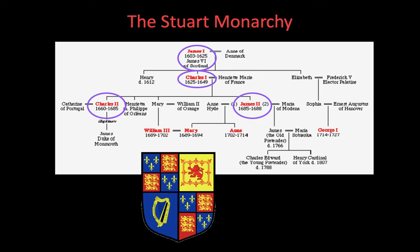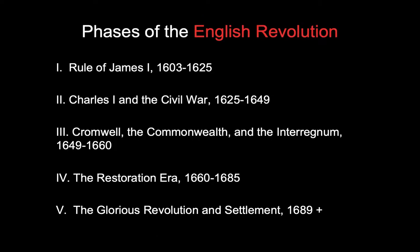We're going to talk about James I and Charles I today. Next class, we'll talk about Charles II and James II. They're all part of the time period known as the English Revolution. I want to lay out five simple steps — five phases — to the English Revolution. The lecture notes and questions are based around these five phases. Today we'll cover James I and Charles I; steps three, four, and five will be saved for another day.